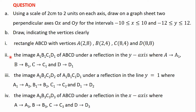Part II: the image A1, B1, C1, D1 of ABCD under a reflection in the Y axis, where A maps to A1, B maps to B1, C maps to C1, and D maps to D1.